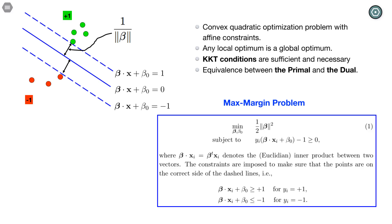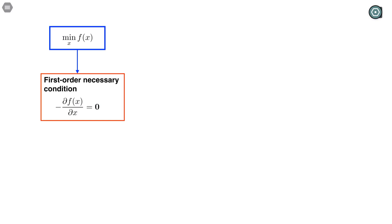So what are the KKT conditions? KKT conditions try to answer the following question. Suppose we know beta and beta 0 are the solution of this optimization problem. What can we say about beta and beta 0? For example, are they satisfied any equalities or any inequalities? So let's first look at the solution to an unconstrained optimization.